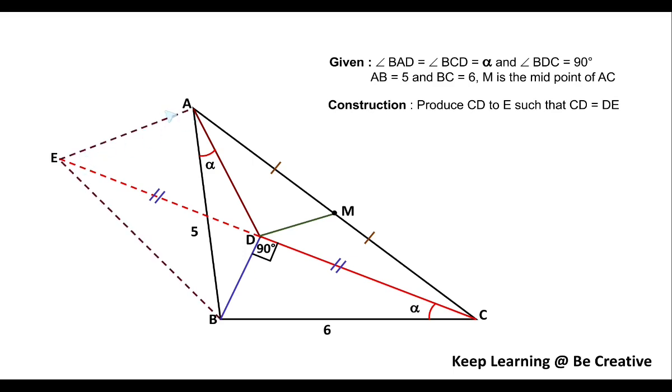So here you will have a triangle AEC in which on the line segment AC, M is the midpoint. And if we produce CD in such a way that CD equals DE, then D also becomes the midpoint of EC. And if you see that if we have two midpoints on the two sides of the triangle, then by midpoint theorem we can say that DM will be half of EA. This is one type of approach in which this question can be solved.